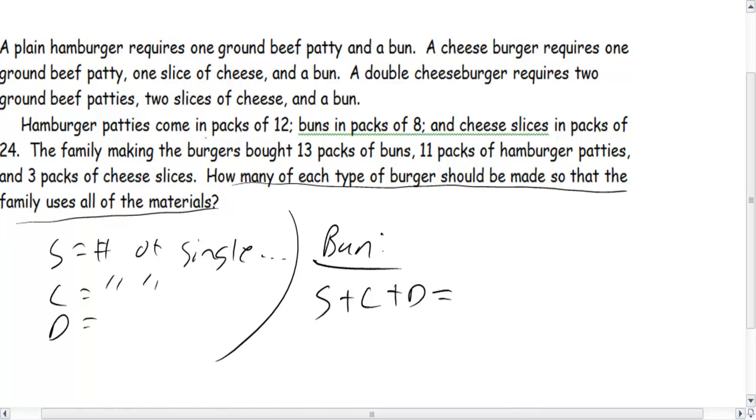So now the question is, how many buns do we have? Well, we see that buns come in packs of eight and the family bought 13 packs of buns, so therefore 13 times 8 will give us our number of buns, which is 104. So there's our bun equation.